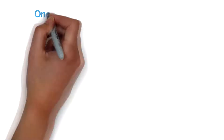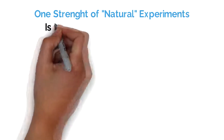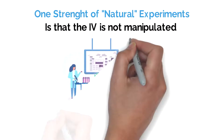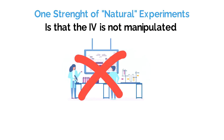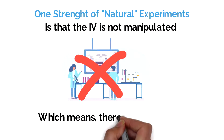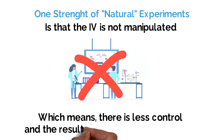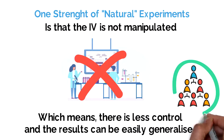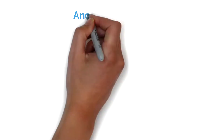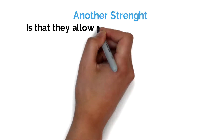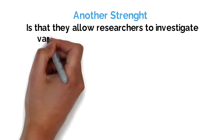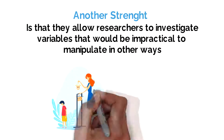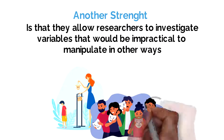One strength of the quasi- or natural experiment is that the independent variable is not manipulated, which makes the situation more ecologically valid. This, in turn, makes it more generalisable to other situations or people. A further strength is that a quasi-experiment allows researchers to investigate variables that would often be impractical to manipulate or investigate in other ways.